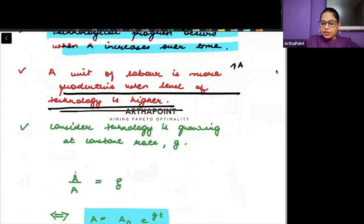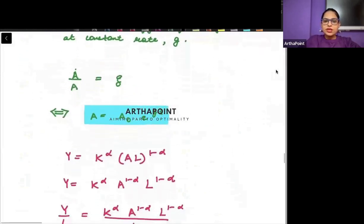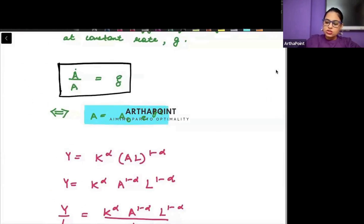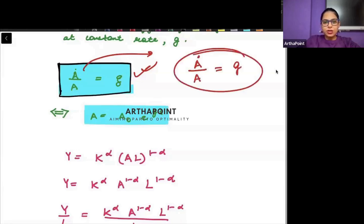So more A means that your labor has become more productive. Now, what we assume is that the growth rate of technology is going to be G. Technology is growing at the rate G. The growth rate is represented as A-dot by A is equal to G. The change in A divided by the original value of A — its growth rate is G.